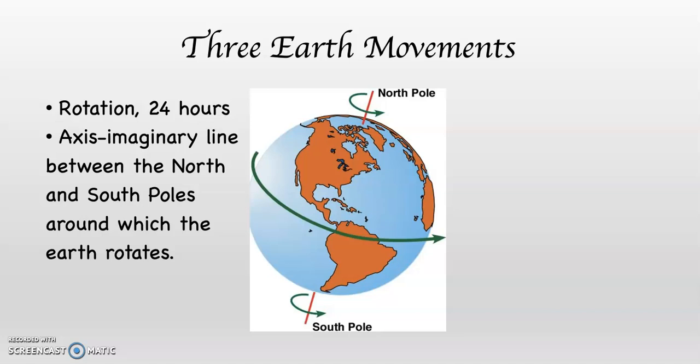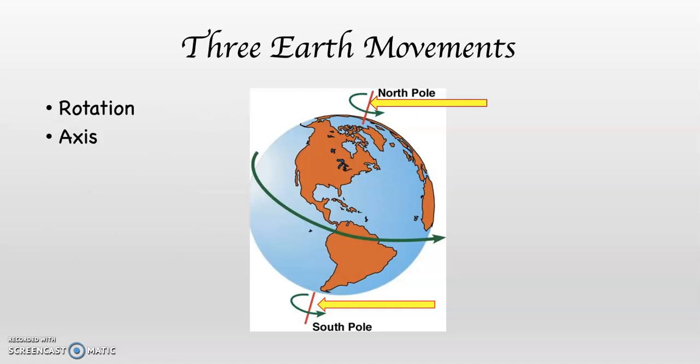You can see if you look at this diagram that those yellow arrows are pointing at the axis. It's that red line. Now, the axis, of course, is not a physical object. You can't reach out and touch it. But at one end of the axis is the north pole, and at the other end of the axis is the south pole. You can see them very clearly right there, north pole and south pole.